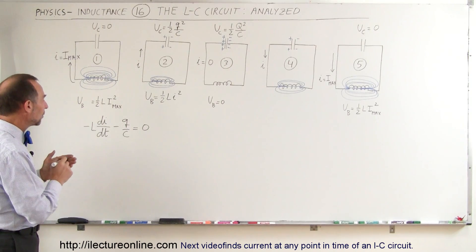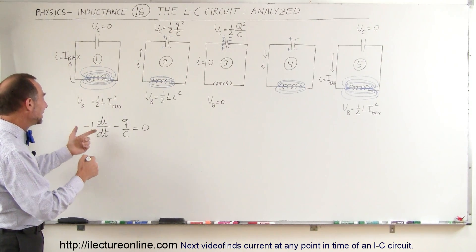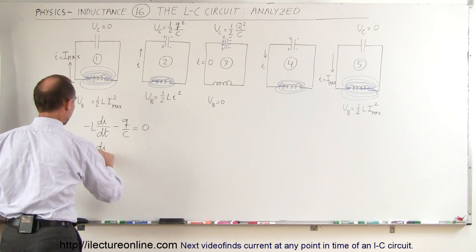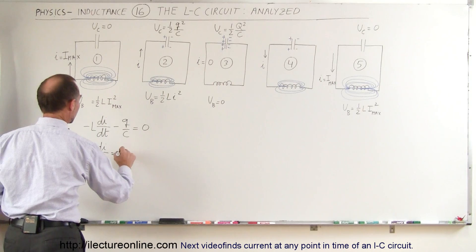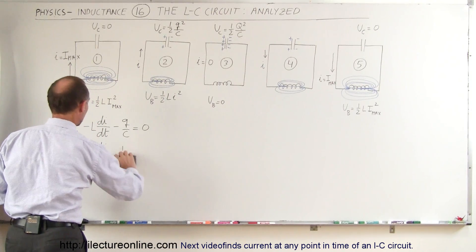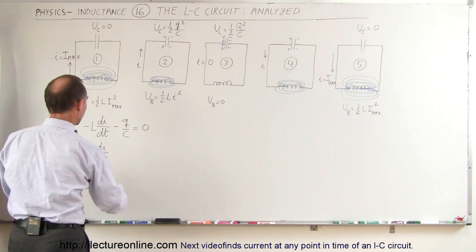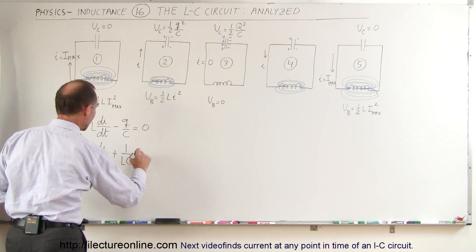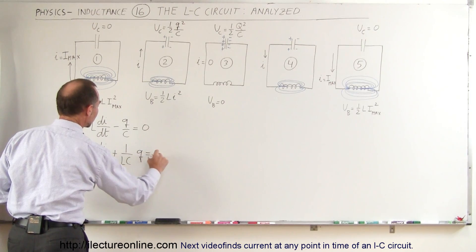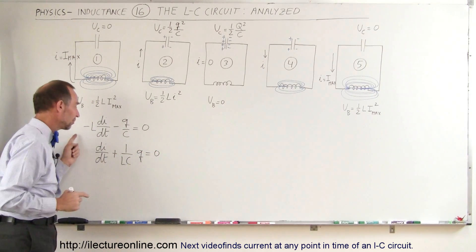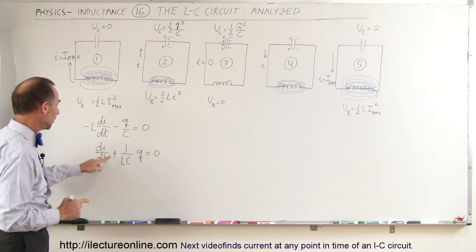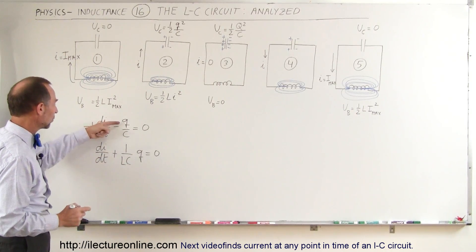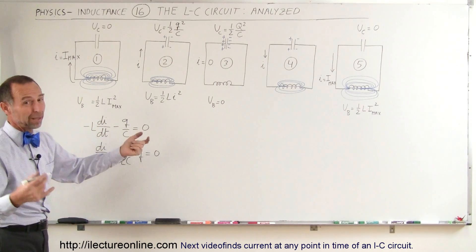Now we're going to divide both sides of the equation by negative L. If we do that, the equation becomes: multiplying both sides by negative 1 makes the term positive, and dividing both sides by L removes the L, giving us plus 1 over LC times Q equals zero. So the L disappears here, we get 1 over L here, and of course 0 divided by L is still 0.